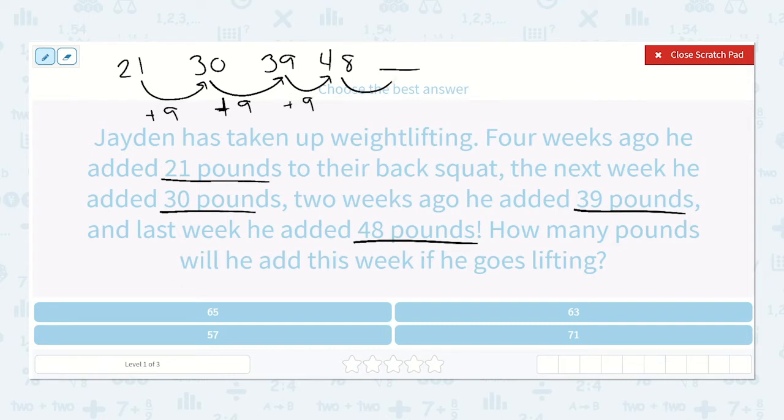So all we need to do to find the next number in the sequence is add 9. 48 plus 9 is 57. So our answer is 57.